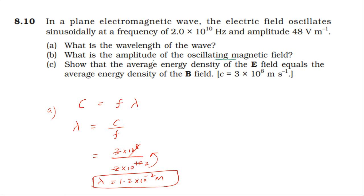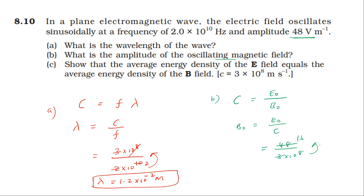For the amplitude of the magnetic field: the amplitude of the electric field divided by the amplitude of the magnetic field equals the speed of light. So B₀ = E₀/c = 48 divided by 3×10⁸. This gives 16×10⁻⁸, which simplifies to 1.6×10⁻⁷ Tesla. That is the answer for the amplitude of the magnetic field.